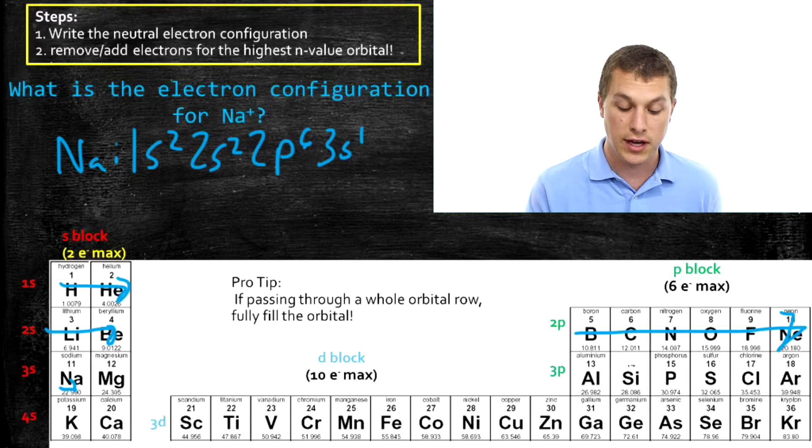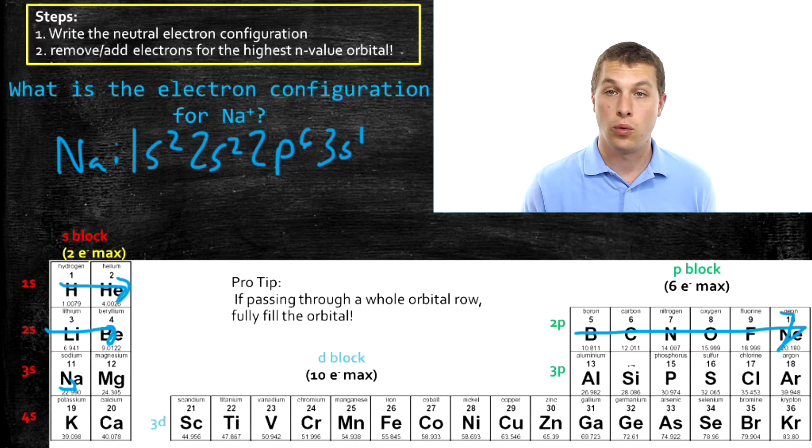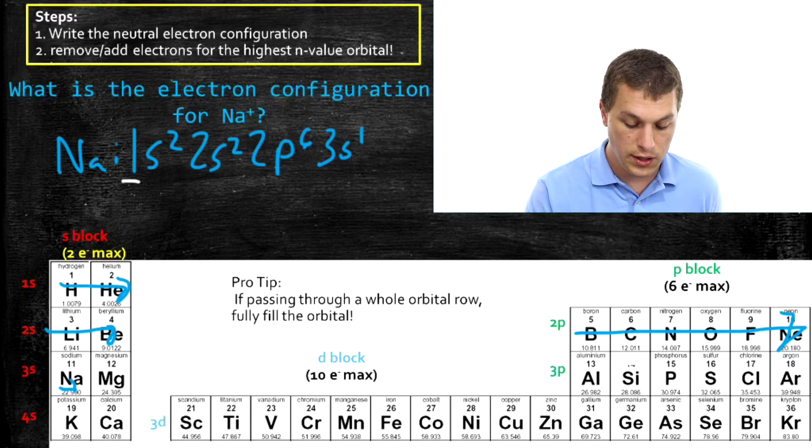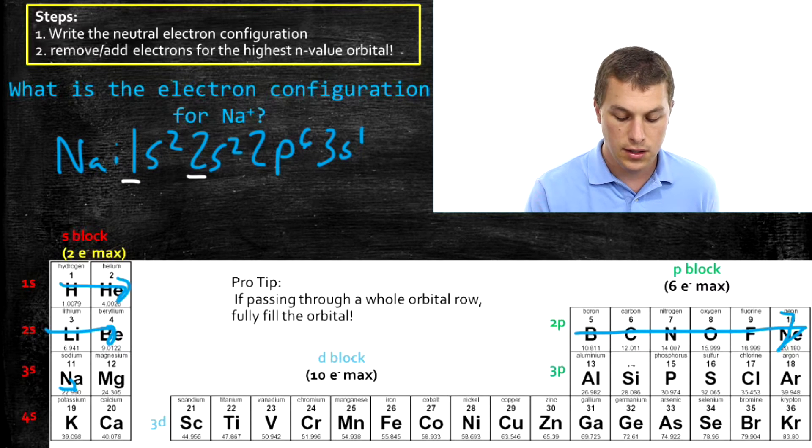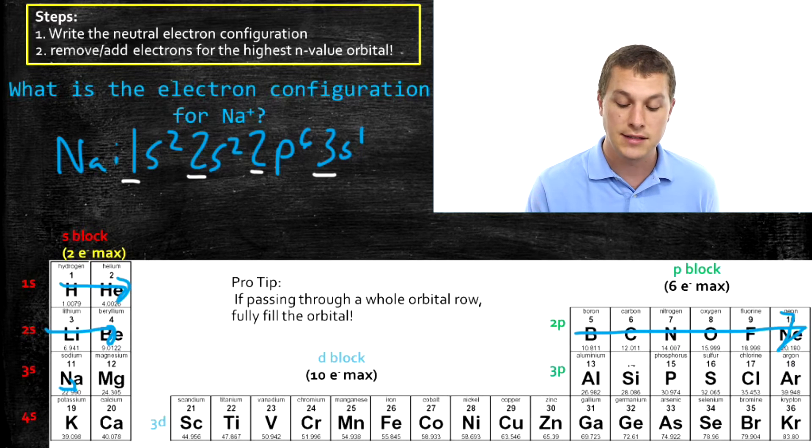And I'm just going to remove an electron from the highest n value orbital. What's that in this case? Well, I have an n value of 1 here, an n value of 2 here, an n value of 2 there, and an n value of 3 there. So that's my highest n value orbital,